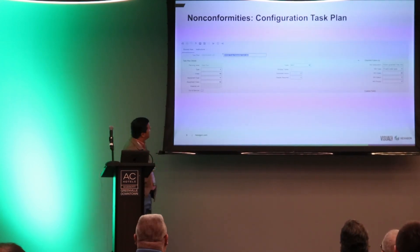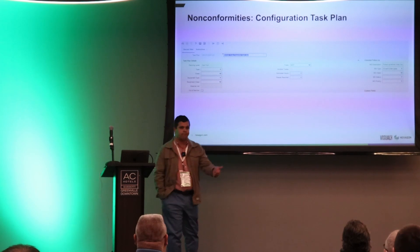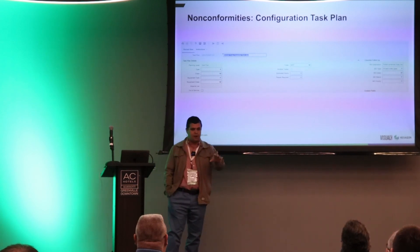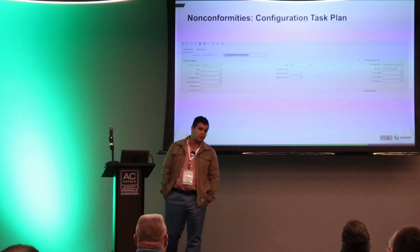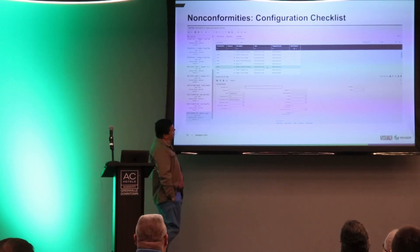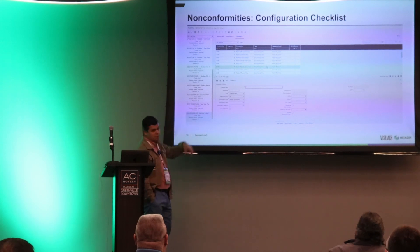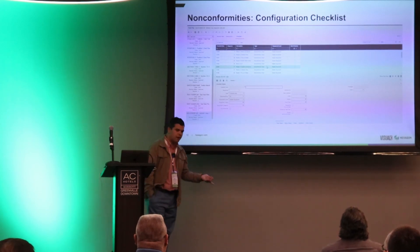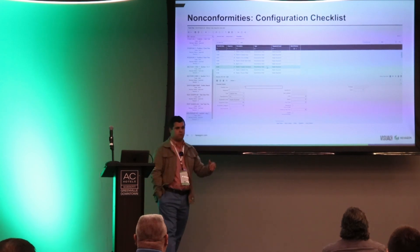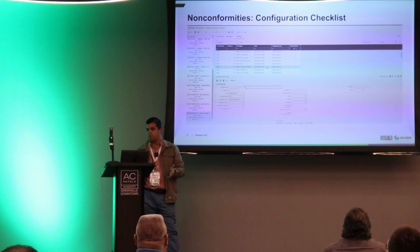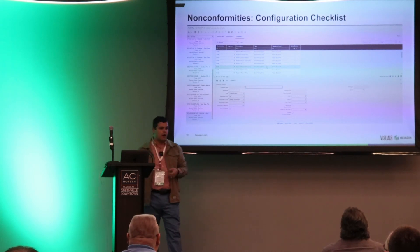Then you have the task plan, which is where you mix everything together. Task plans are mainly for your PM and frequency - how you engage people to go out and capture that value and see if there's a non-conformity. Within the task plan you have different checklists, and the type can be a non-conformity check or a non-conformity measurement, depending on what you want to capture. How you configure it is how the person will see it through the computer or mobile device.